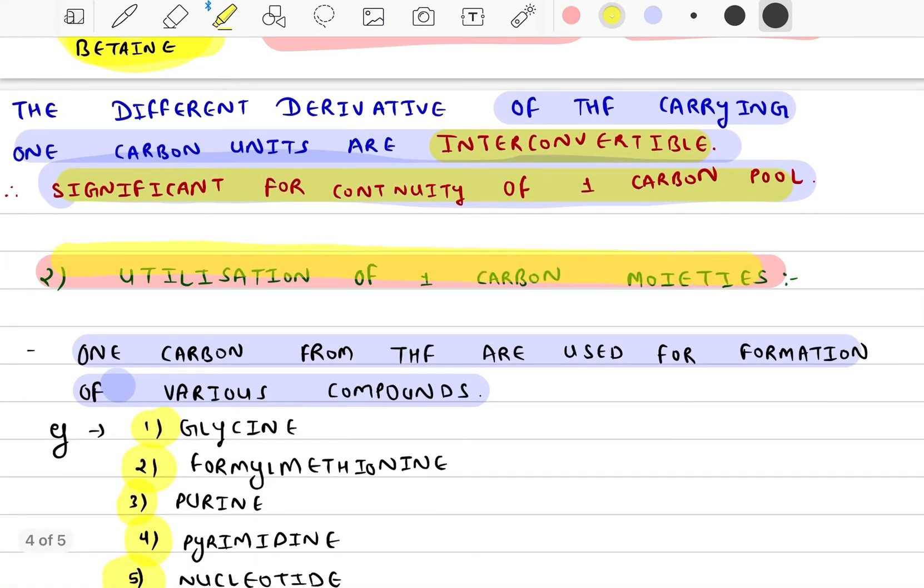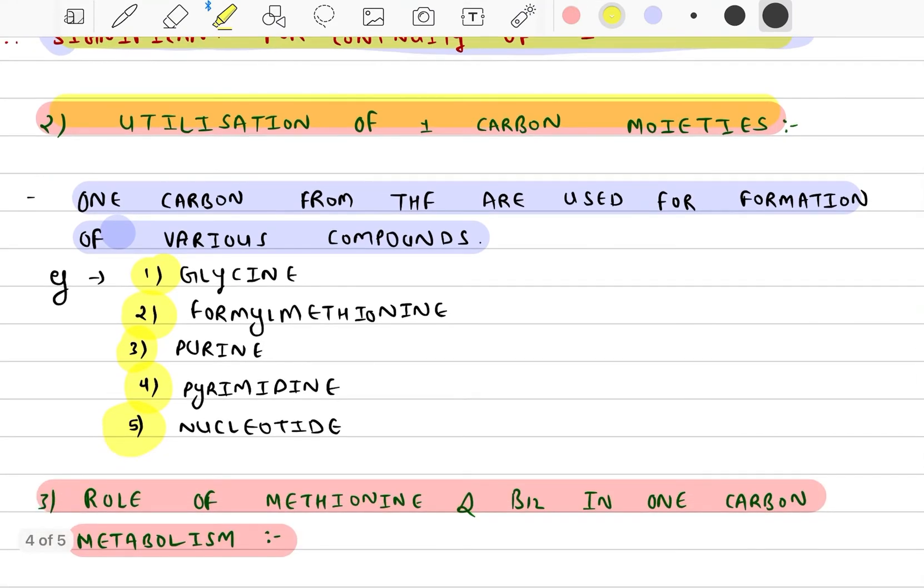Utilization part is very easy. One carbon units from THF are used for the formation of various compounds: Glycine, Formyl Methionine, Purine, Pyrimidine and Nucleotides.